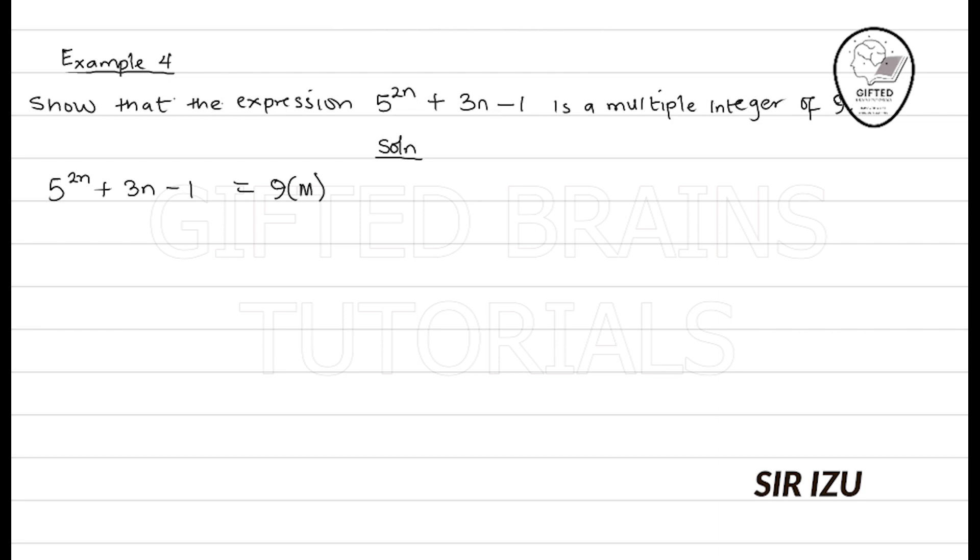The first thing to do as usual is to select n. Let n be equal to 1. And here, if n is equal to 1, we have 5^(2×1) + 3×1 - 1.